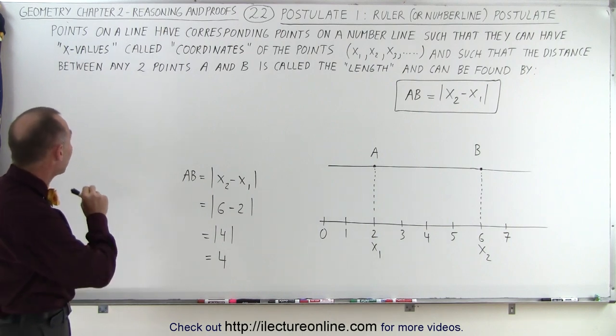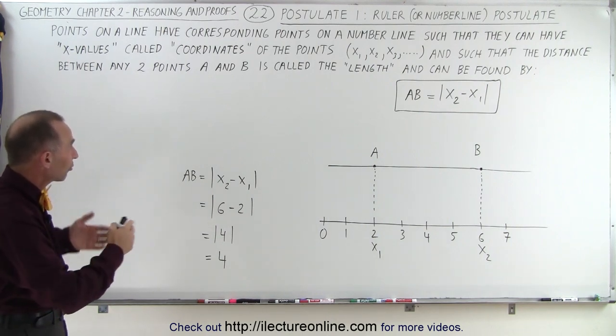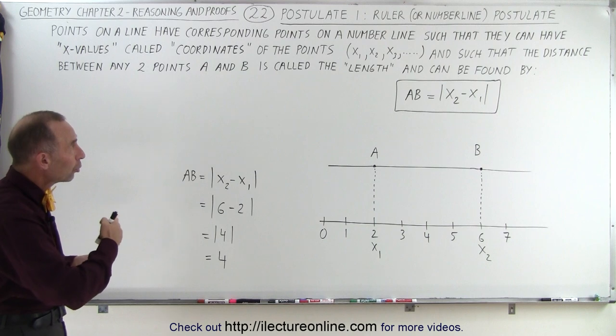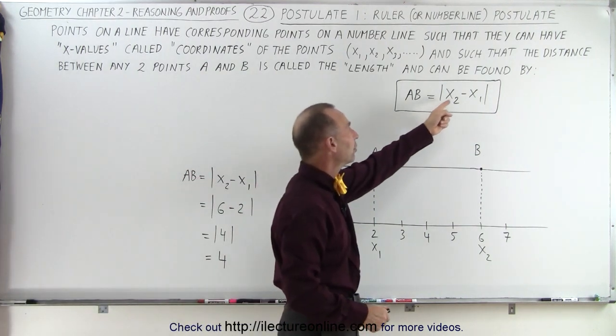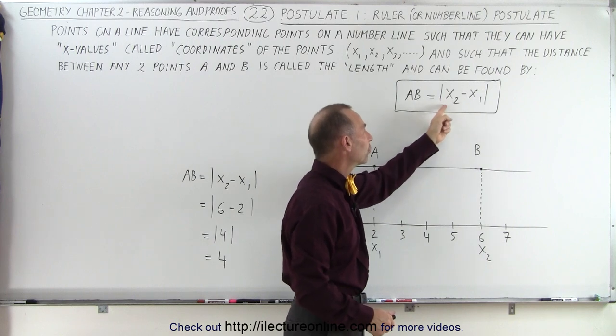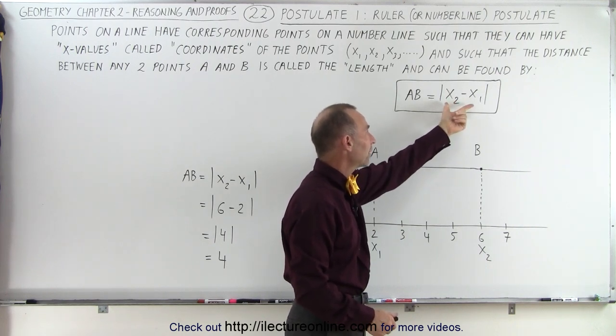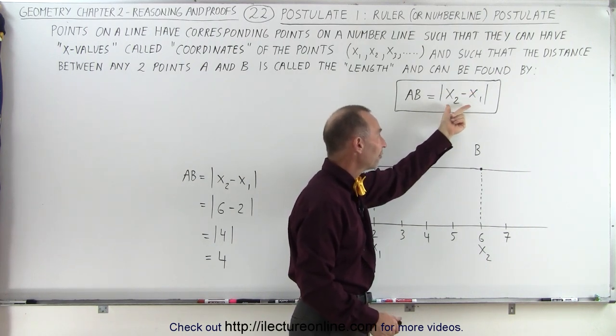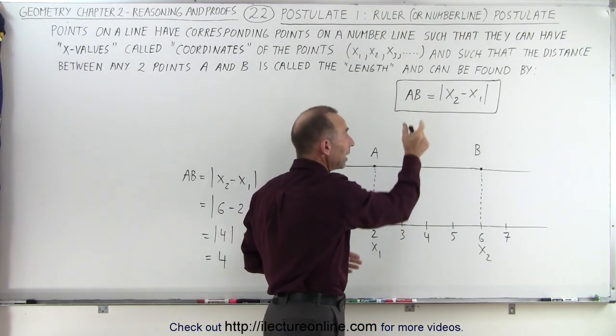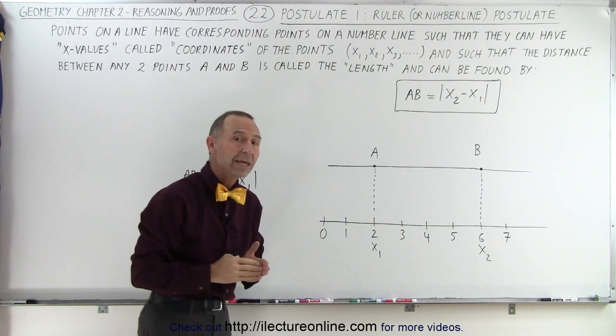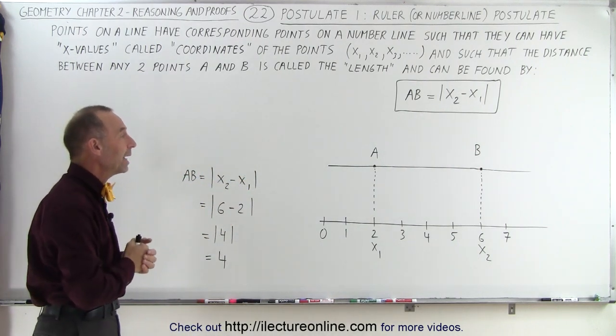The distance between any two points, let's call them A and B, is called the length. It can be found by taking the absolute value of the difference between the two coordinates. So we take the absolute value of the difference between two coordinates associated with the two points, and that would be the length between A and B or the distance between A and B.